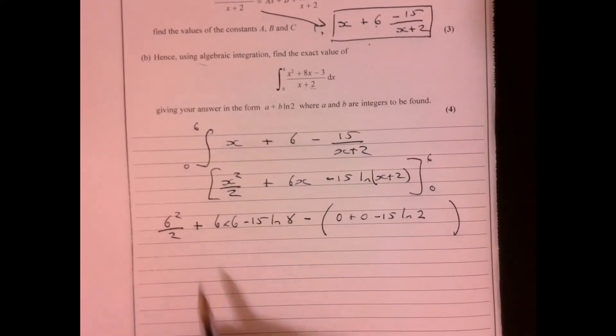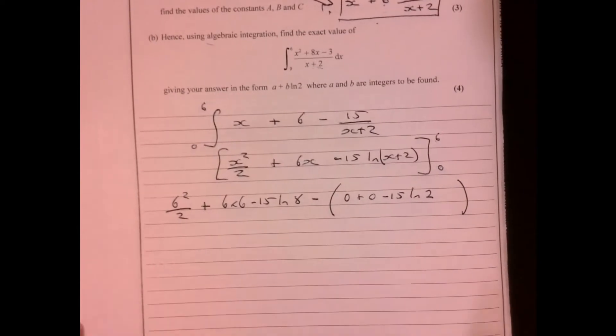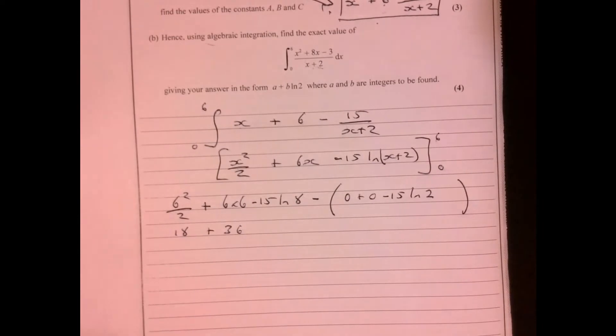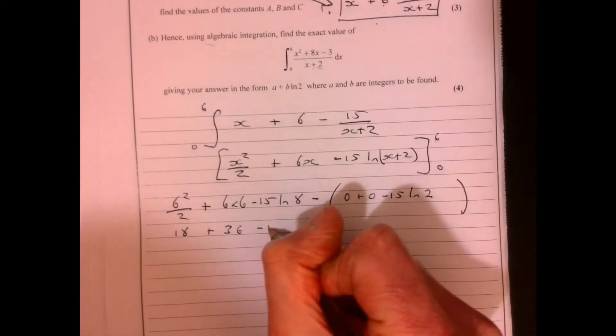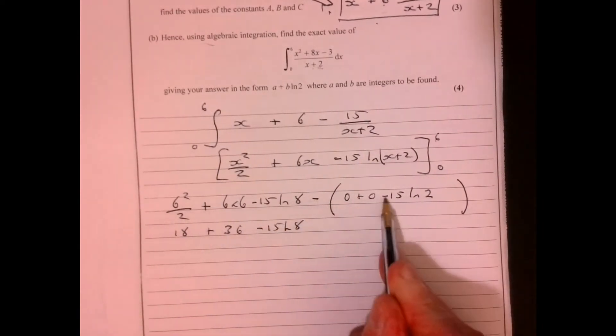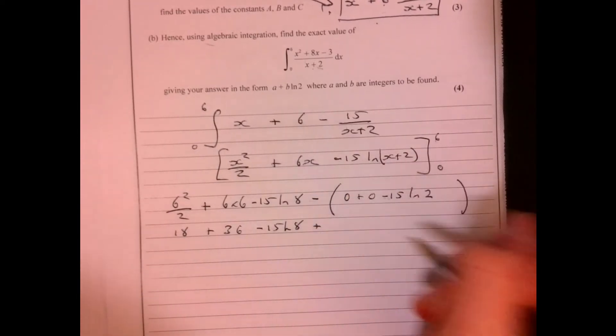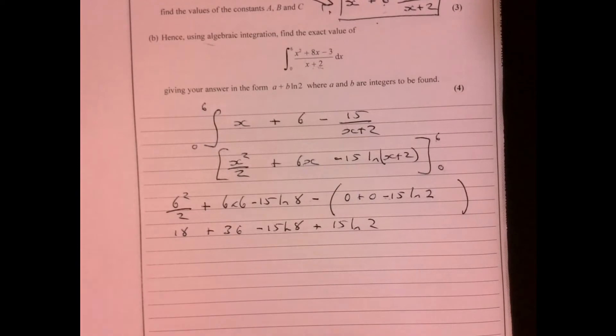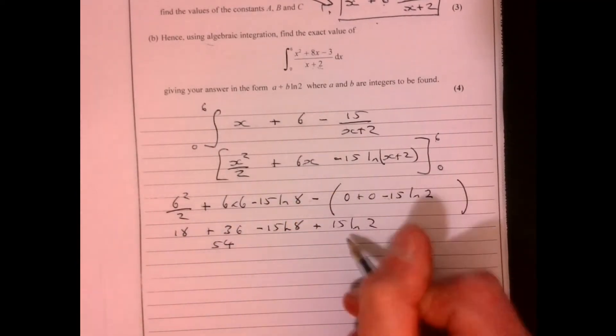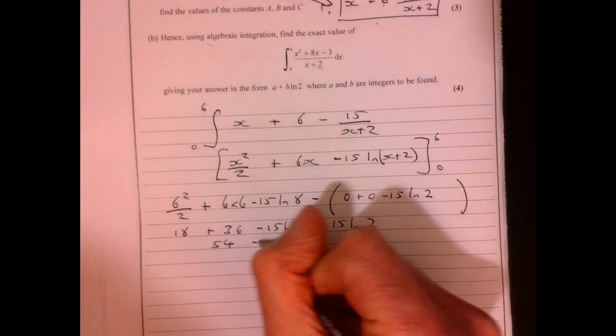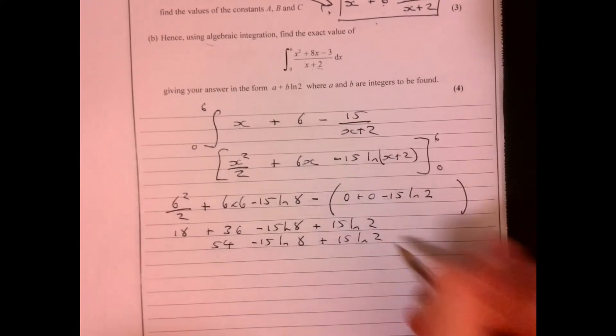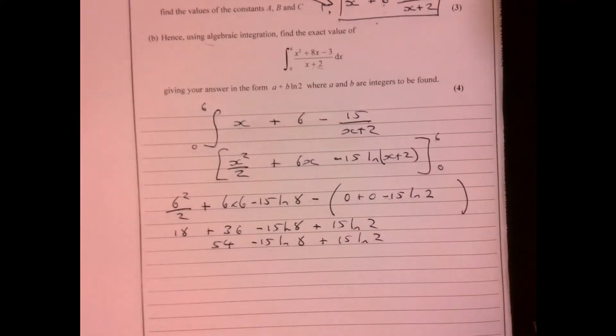All right, let's get that together, tidy it up, get rid of the brackets. What's that going to give me? That's going to give me 18 plus 36, and then I've got minus 15 ln 8, plus 15 ln 2. That's going to give me 54, and now I need to combine these guys together, but there is a bit of a clue in the question.